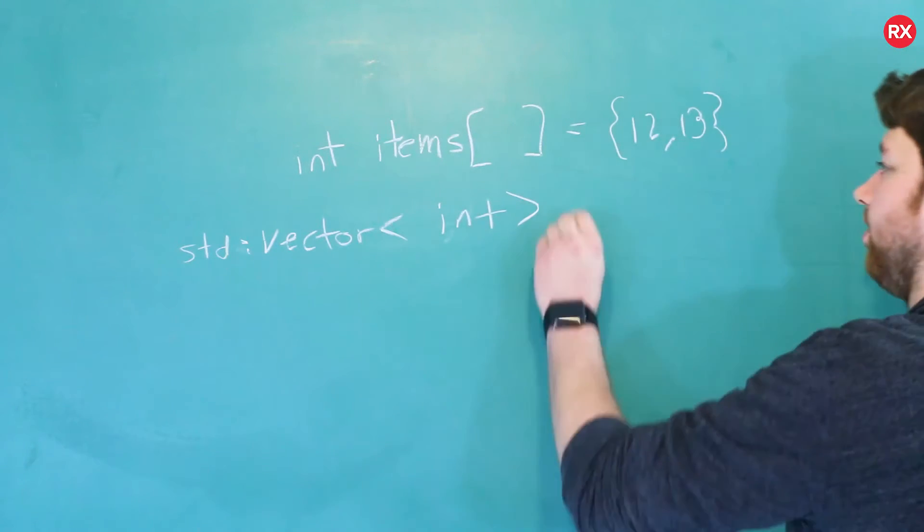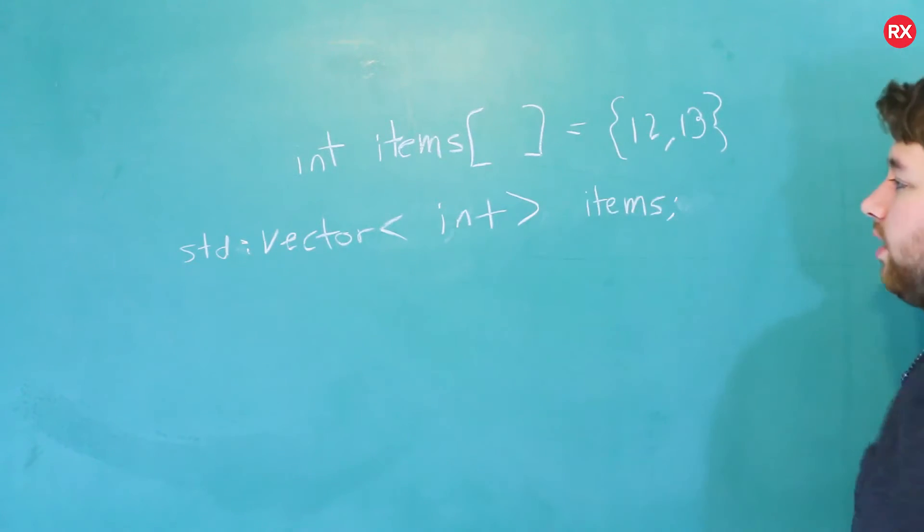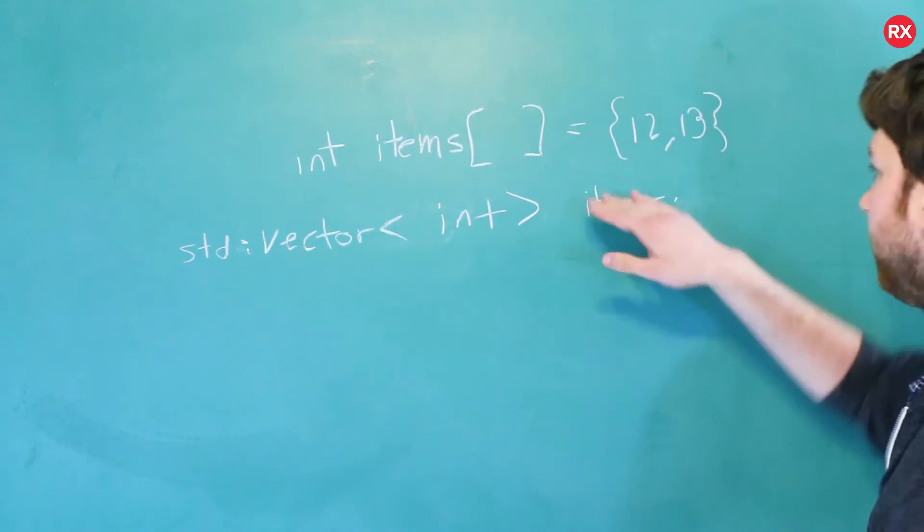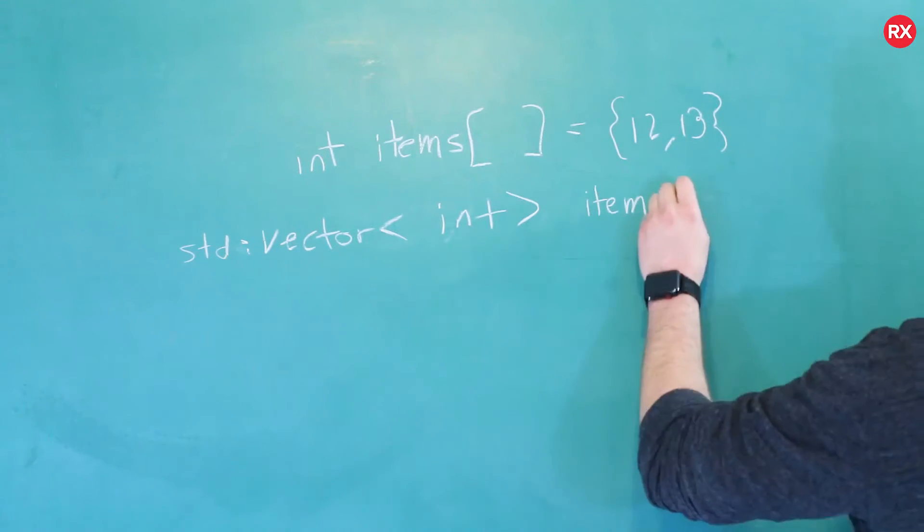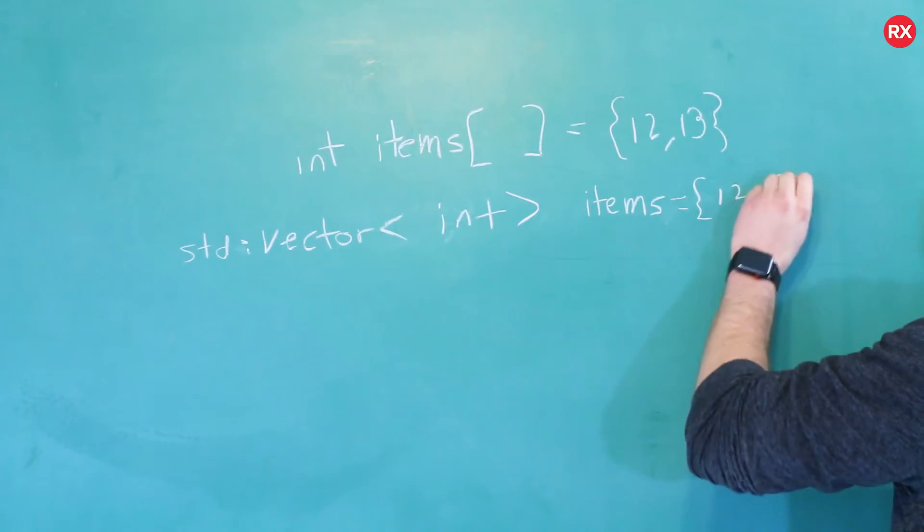So it might look like that, and then you give it a name, like so. And then you can also assign it a sequence of values like that. So you could say 12 and 13.